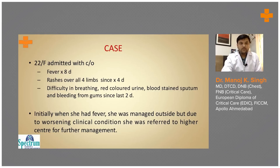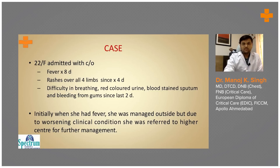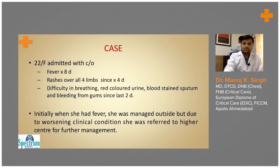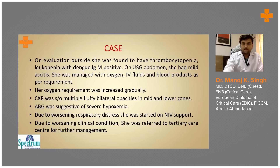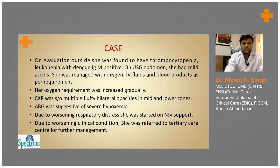We have a case of a 22-year-old female admitted with fever since eight days, rashes all over the four limbs since four days, difficulty in breathing, red color of urine, blood-stained sputum, and bleeding from gums since the last two days. The patient was initially managed outside but due to worsening condition she was referred to a higher center, where evaluation found leukopenia, thrombocytopenia, and hypoxemia.